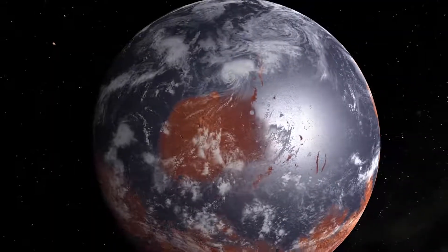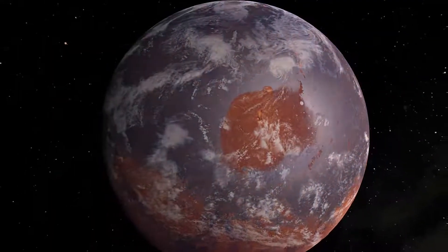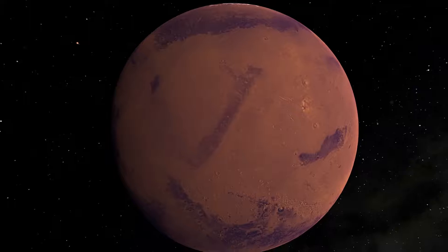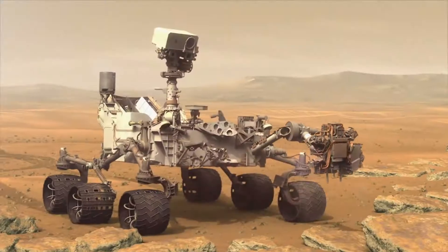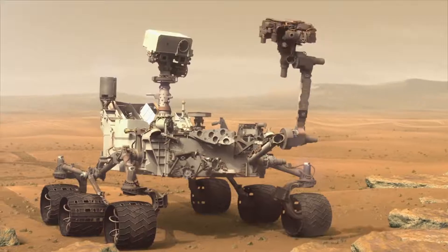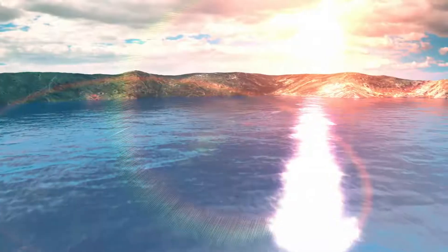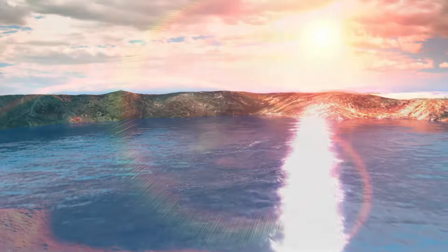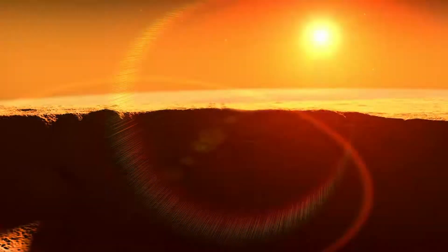In the distant past, Mars was much warmer and wetter than it is today. The rocks at Gale Crater tell us it was once an environment where life as we know it could have survived. The discovery of ancient organic molecules shows that another ingredient of life was present at that time, and it broadens our understanding of habitability of both ancient and modern Mars.